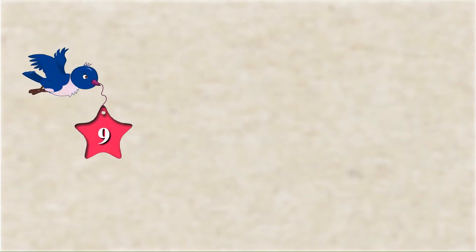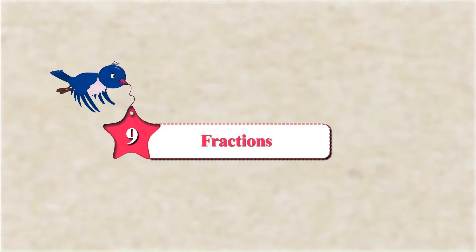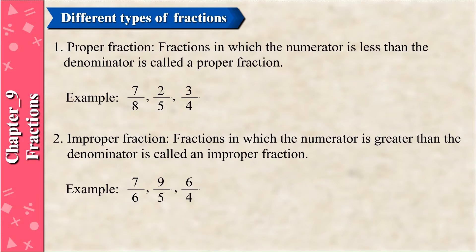Chapter 9: Fractions. Different Types of Fractions. Proper Fraction: Fractions in which the numerator is less than the denominator are called proper fractions. Examples: 7/8, 2/5, 3/4.